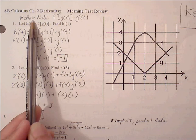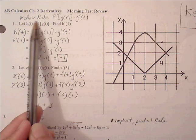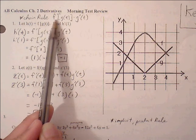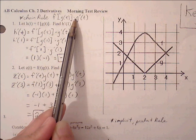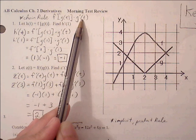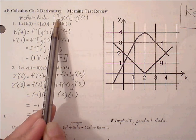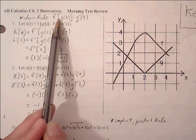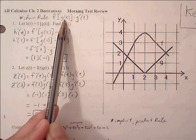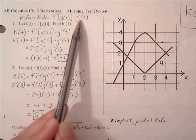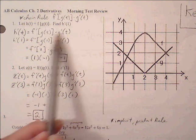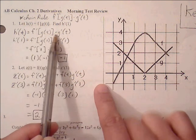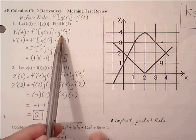To recall, chain rule says that we need to evaluate the outer function's derivative, then multiply it by the inside function's derivative. So the outer function is f prime. So f prime of g of t — we need to first find that and then multiply it by g prime of t. So h prime of t is equal to f prime of g of t times g prime of t.